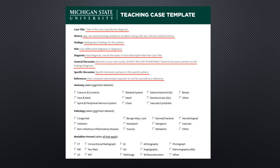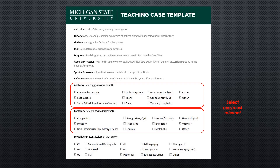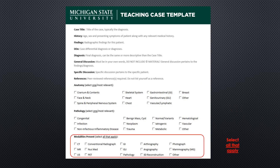Ultimately, the cases you submit will be accessible by anyone on the globe. All images and content become copyrighted property of Michigan State University, but your name will be listed as one of the authors on each of your cases. Not only are they a reflection of MSU, they are a reflection of you. For both the Anatomy and Pathology sections, select one most relevant checkbox. For the Modalities Presence section, you may select all that apply. You will submit one Word document for each of your required teaching cases, along with accompanying images — more on those later.